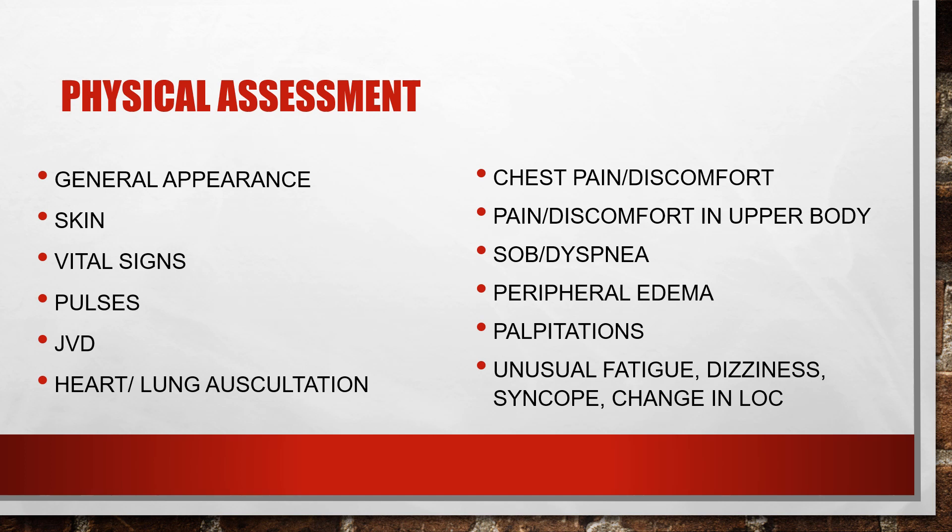For the physical assessment, we start with general appearance: how they look, whether they are in distress, their skin coloring, and their breathing. We assess vital signs — paying close attention to pulse, blood pressure, and pulse ox — and may perform orthostatic blood pressures for complaints of lightheadedness or dizziness. We assess for JVD, all pulses, and edema. We auscultate the heart for abnormal sounds like murmurs, S3, and S4, and auscultate lung sounds since heart and lung issues often go hand in hand.